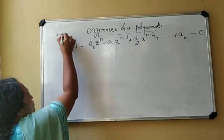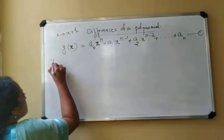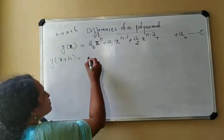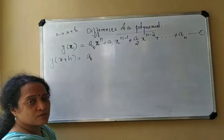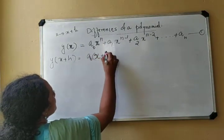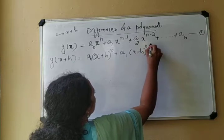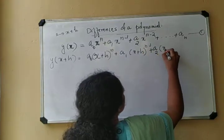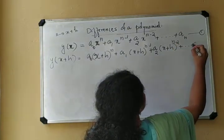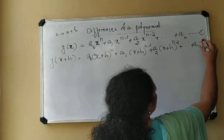Now due to a very small change in x, that is when x changes to x+h, the value of y also changes. The value of y may be written as y(x+h), and that will be equal to a0·(x+h)^n + a1·(x+h)^(n-1) + a2·(x+h)^(n-2) + ... + an, since an is independent of x. This may be marked as equation number 2.